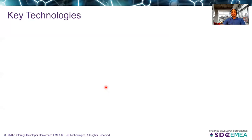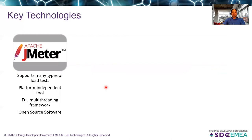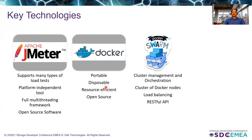We built this solution using 100% open source tools. The first key tool is JMeter — a platform-independent, multi-threading framework. It's open source, supports a wide number of load test types, and is one of the industry-leading performance and load testing tools. The second is Docker and Docker Swarm. Docker is a portable solution that can run JMeter scripts inside containers — it's quickly disposable and resource-efficient. Using Docker Swarm, we can orchestrate multiple Docker nodes, load-balance containers across load generator nodes, and manage them. Docker Swarm is our orchestration solution and has a REST interface.